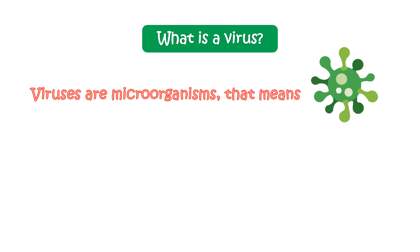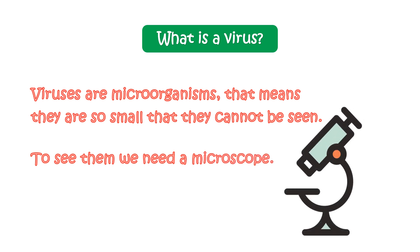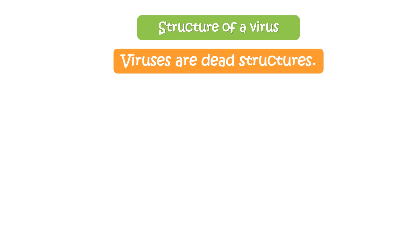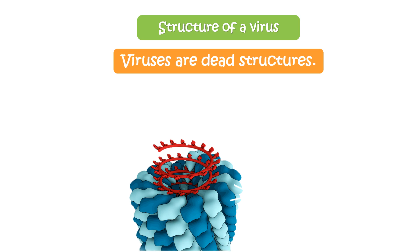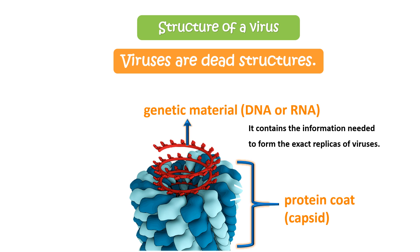Viruses are microorganisms — they are so small that they cannot be seen without a microscope. Here is a fact: viruses are dead structures. Unlike cells, viruses do not have the necessary machinery to produce more of their own kind by themselves. They are composed of only genetic material surrounded by a protein coat, also known as a capsid, which protects the genetic material. The genetic material can be DNA or RNA, containing the information needed to form exact replicas of viruses — however, they lack the machinery needed to make those replicas.